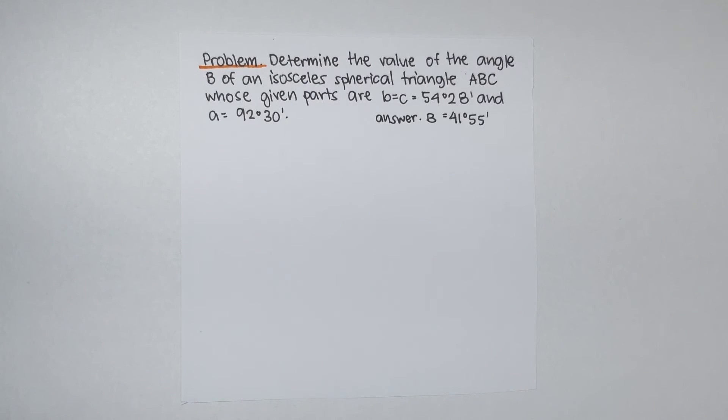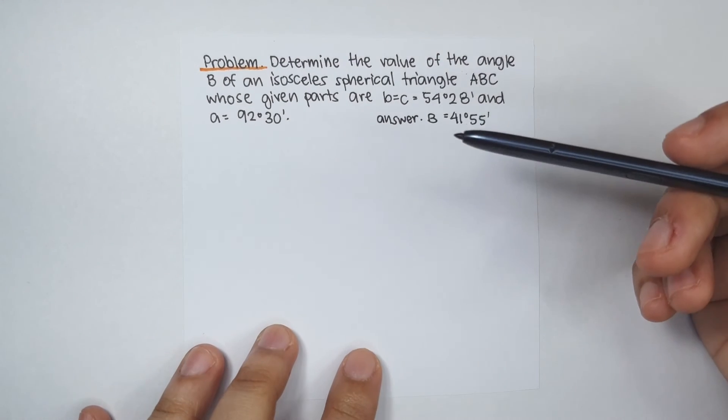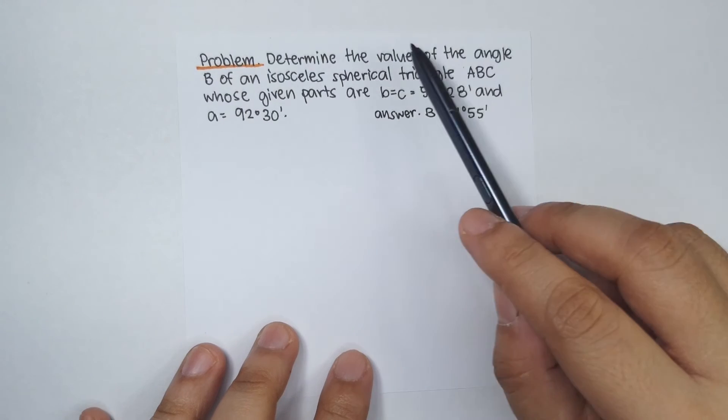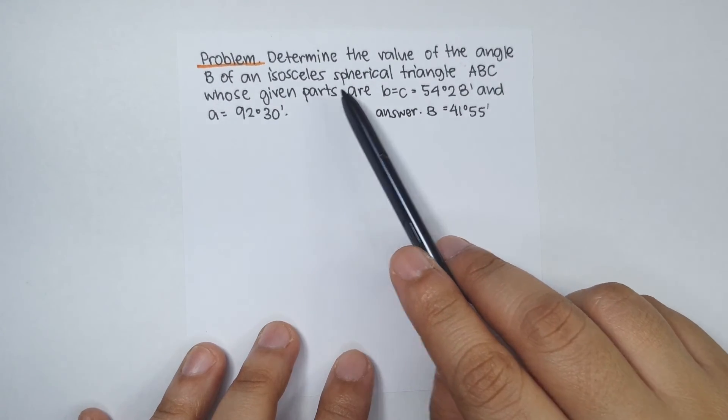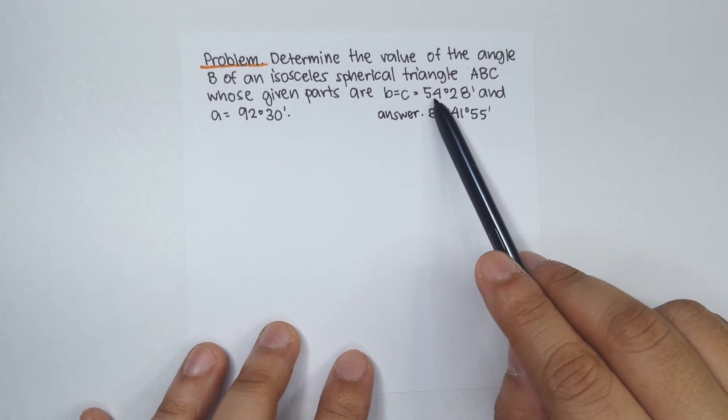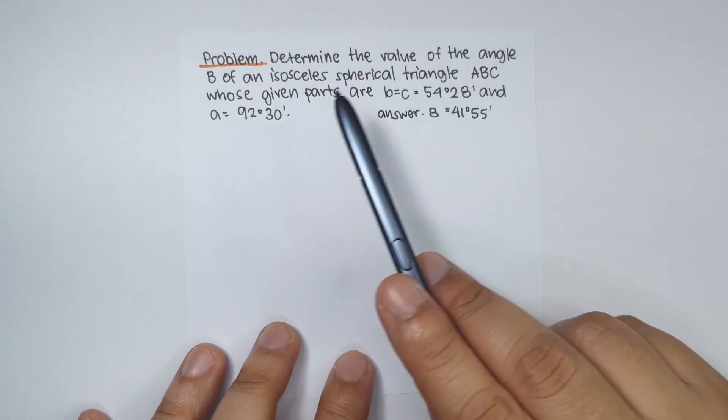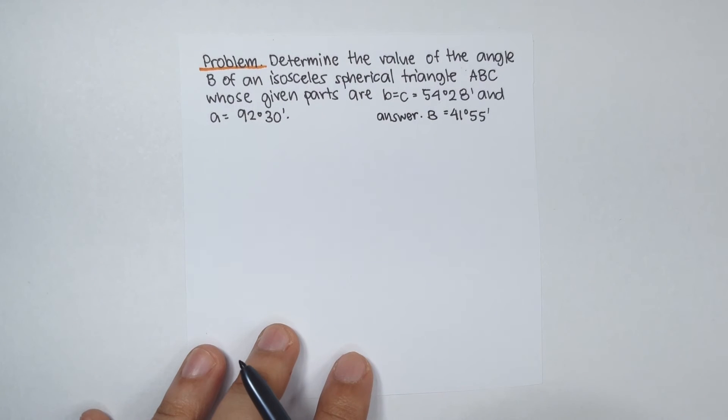Now, I want you to solve this last problem to check if you've really understood the discussion. Determine the value of angle B of an isosceles spherical triangle ABC whose given parts are B equal to C equal to 54 degrees 28 minutes and A is equal to 92 degrees 30 minutes.